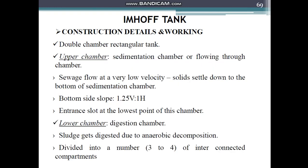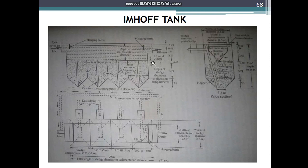The neutral zone is a free or clear zone maintained to prevent particles of sludge or scum from entering into the sedimentation chamber from the digestion chamber. The scum and sludge levels are maintained at least 45 cm above and below the slot respectively, forming the neutral zone.